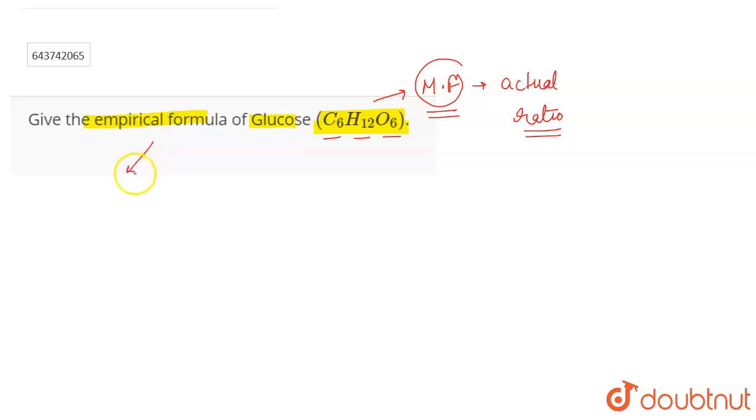Now if you talk about the empirical formula, then empirical formula gives us the simplest ratio. So just by looking at the empirical formula, you can't guess which particular compound it is. So empirical formula is the simplest ratio.